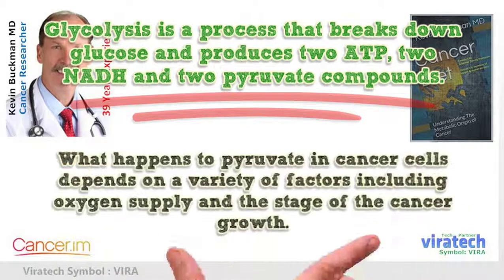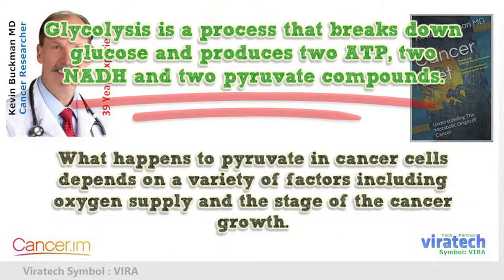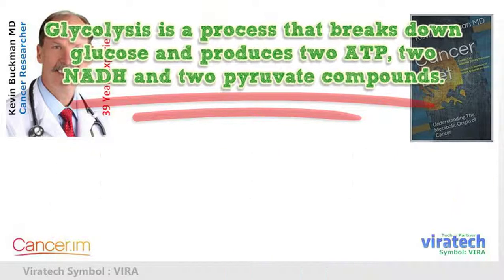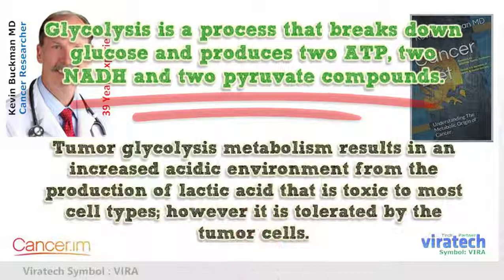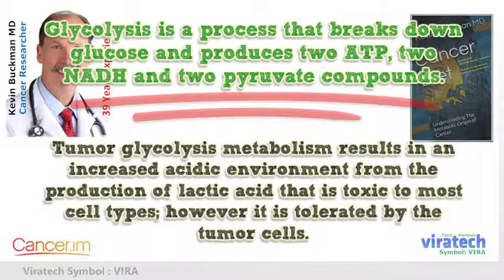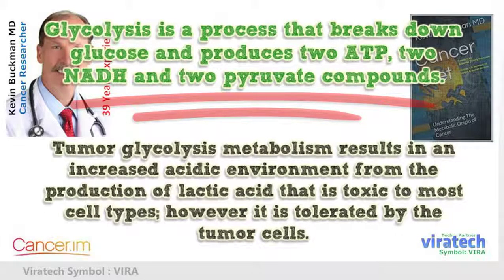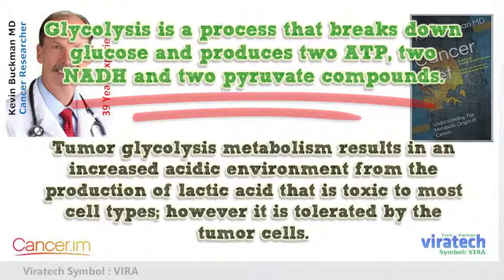What happens to pyruvate in cancer cells depends on a variety of factors including oxygen supply and the stage of the cancer growth. Tumor glycolysis metabolism results in an increased acidic environment from the production of lactic acid, which is toxic to most cell types; however, it is tolerated by the tumor cells.